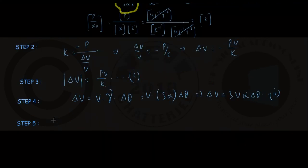So in step number 5, we compare equations 1 and 2. You can write down that PV upon K must equal thrice V alpha into delta theta if the cube has to regain its original volume. You can see from both sides V is canceling out, and delta theta is coming out to be P divided by thrice K alpha—or thrice alpha K.